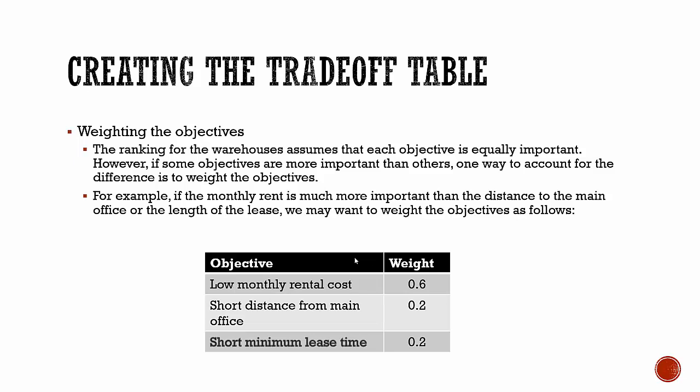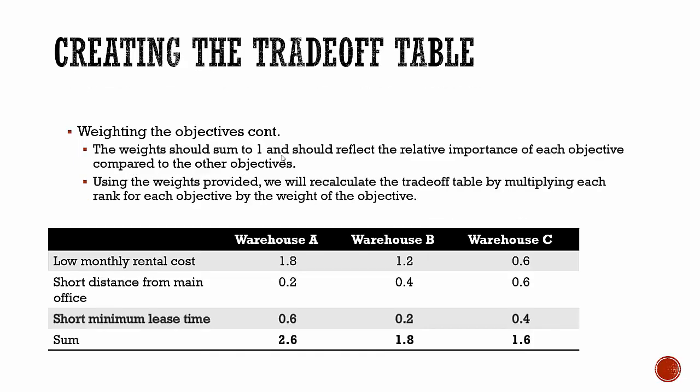Low monthly rental cost is the most important, so we give it a weight of 0.6. Short distance from the main office — since all warehouses have a fairly short distance, it's not a big deal, so it gets a weight of 0.2. Short minimum lease time may not be that important either, so we also rank that 0.2. The weights should sum to one and reflect the relative importance of each objective compared to the others.